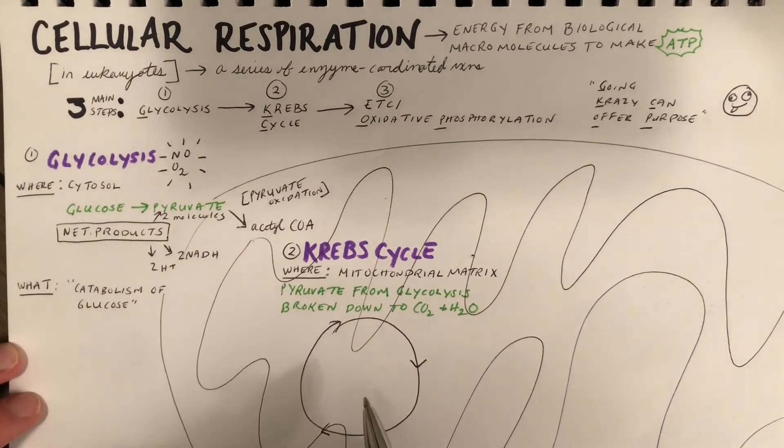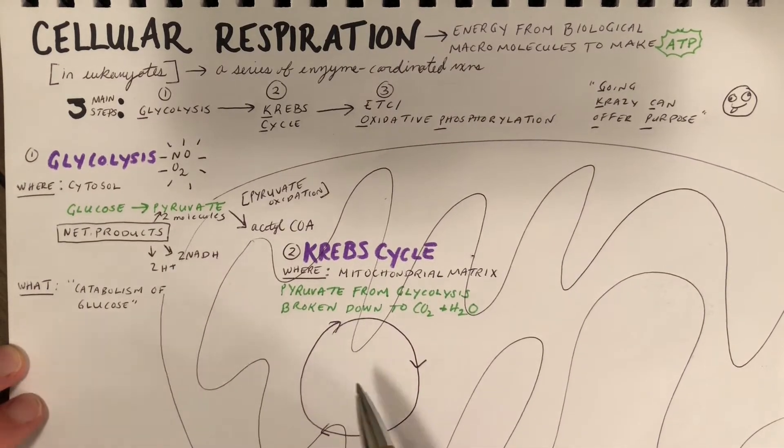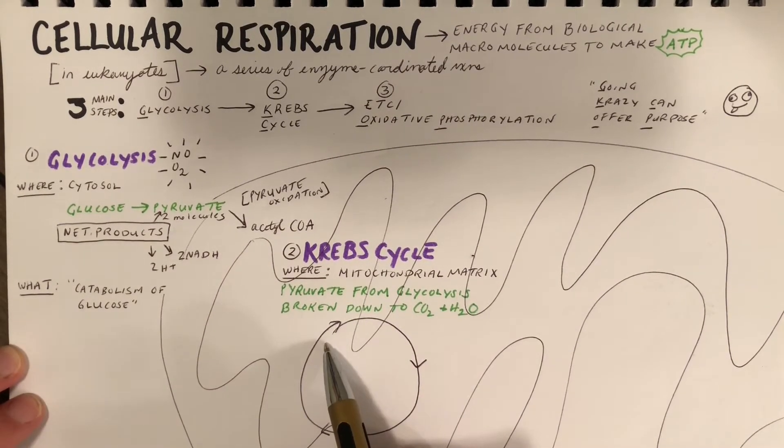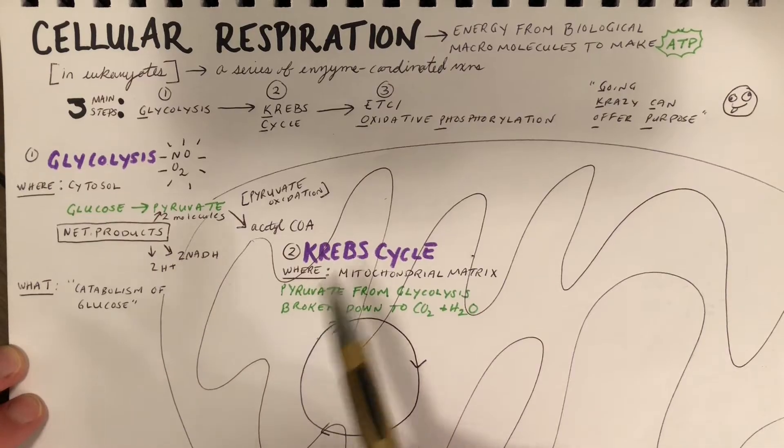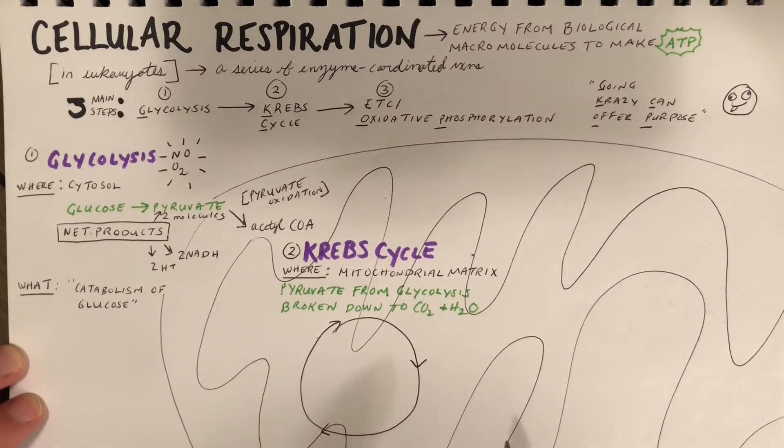Now you need to know that the Krebs cycle is indeed a cycle, but you don't need to know all of the steps or the different molecules produced throughout the entire cycle. It's called a cycle because the final product is actually going to be the exact molecule that we need to accept the acyl coenzyme A to start another turn of the cycle.